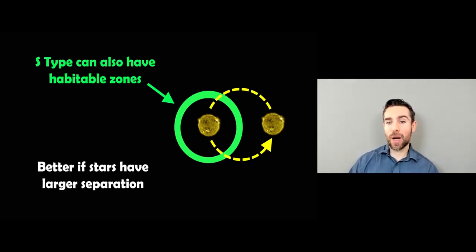Now, S-type can also have habitable zones. It would be better suited for planets that are around stars that have a larger separation because otherwise they're going to be destabilized and actually the contribution from the second star is going to alter things. So actually, this is not necessarily a true representation of what the habitable zone might look like. It's just an illustration really. But they can have habitable zones, but they're better suited for being further separated in the stars.